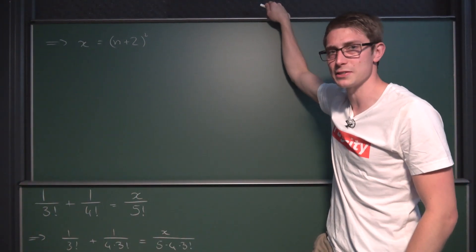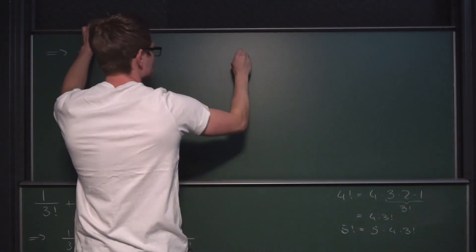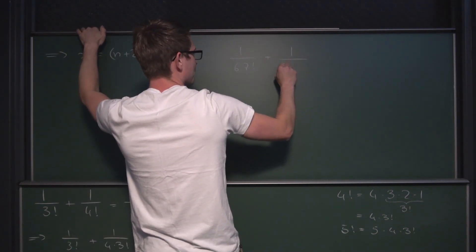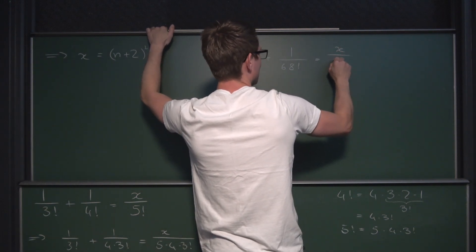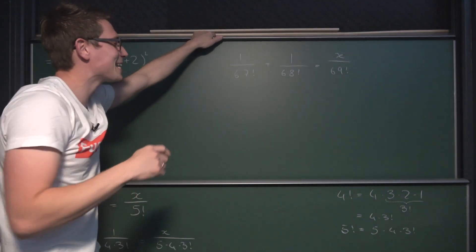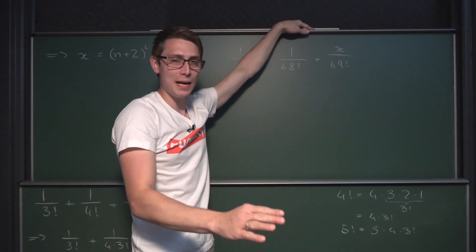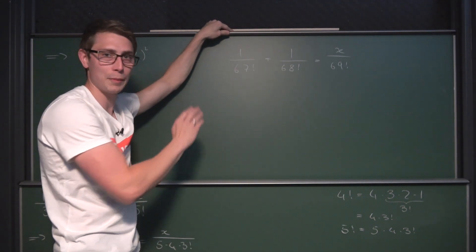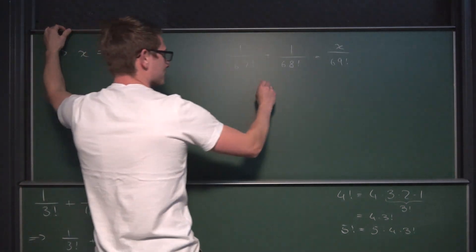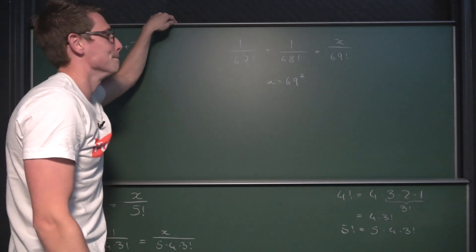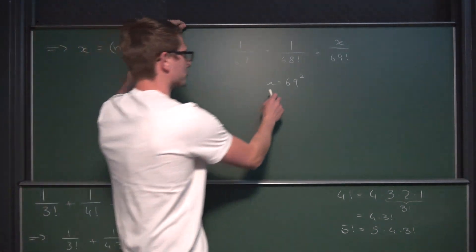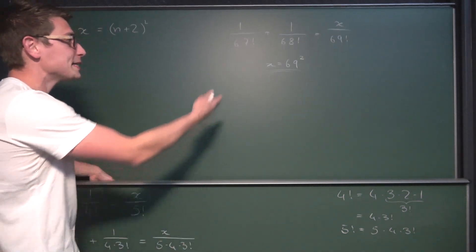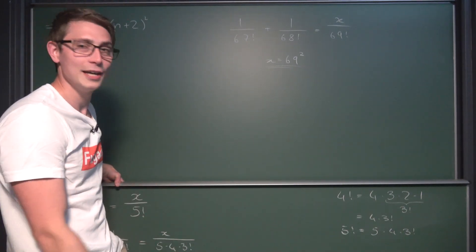The generalization holds and always gives us a perfect square as the solution. For example: 1 divided by 67 factorial plus 1 divided by 68 factorial equals x divided by 69 factorial — that is so nice! Choosing random numbers, we get x equals 69 squared. Or taking 418 as another random number — this works out and checks out pretty nicely indeed.